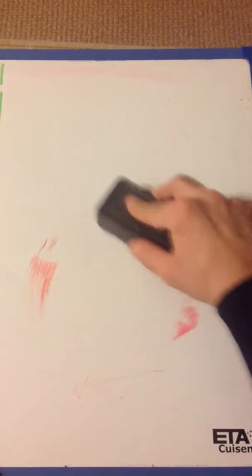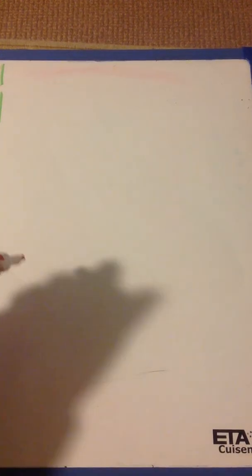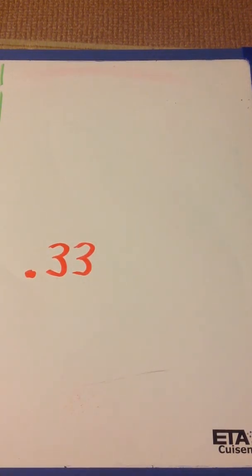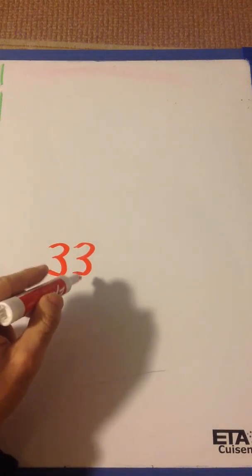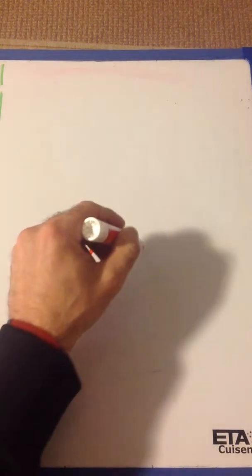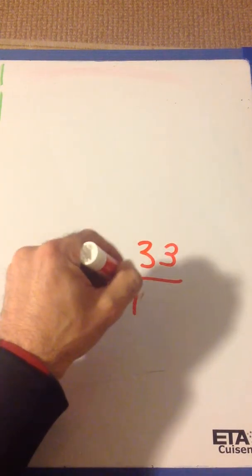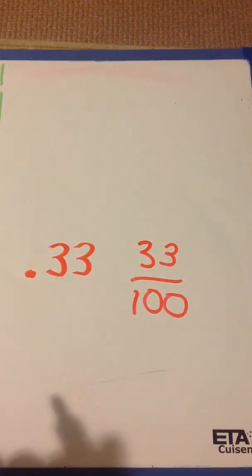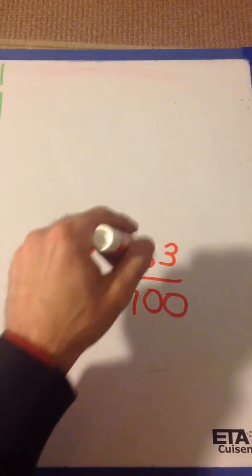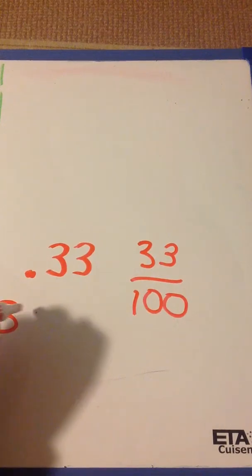Now, what if you already had a decimal, like 0.33? Well, we know that it's in the hundredth place, right? We have the tenth and the hundredth place, so we know it's 33 over 100. And we know that fractions are percents. So any time you have a fraction over 100, it is a percent. So that's just 33%.